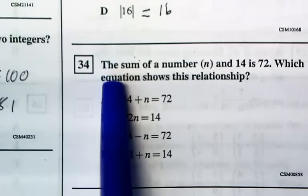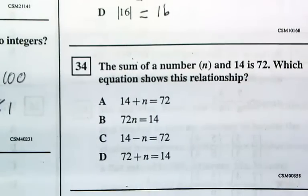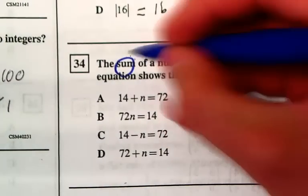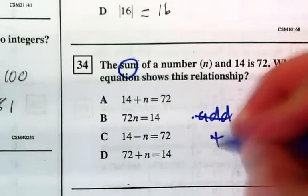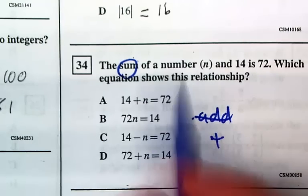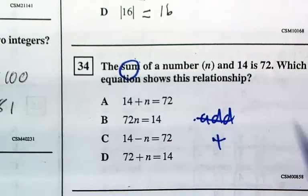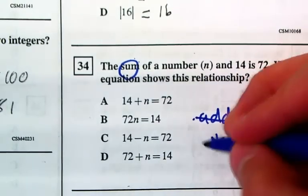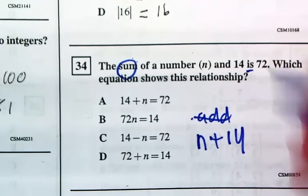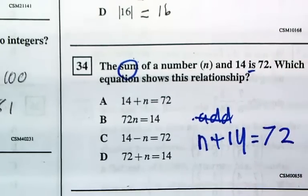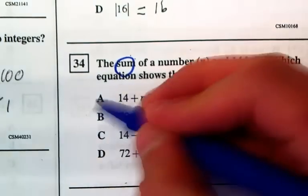For number 4, it says the sum of a number N and 14 is 72 — which equation shows this relationship? Sum means add, and it says a number N and 14, so that's N and 14. And then 'is' means equals 72. So let's switch that around, and then we get A.